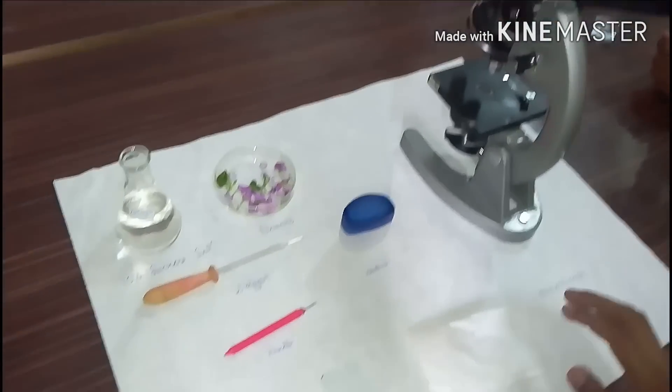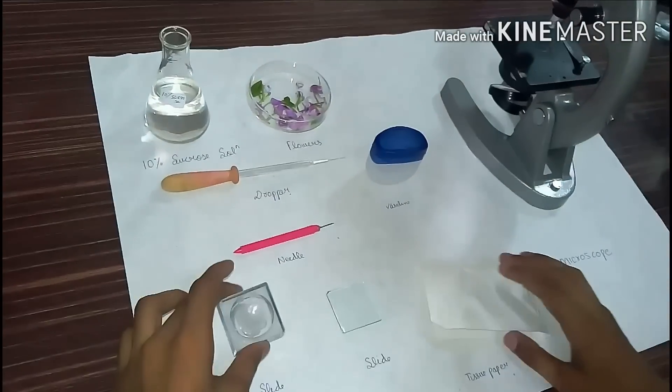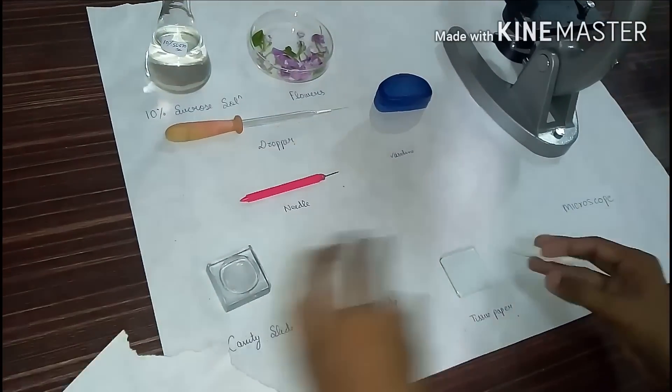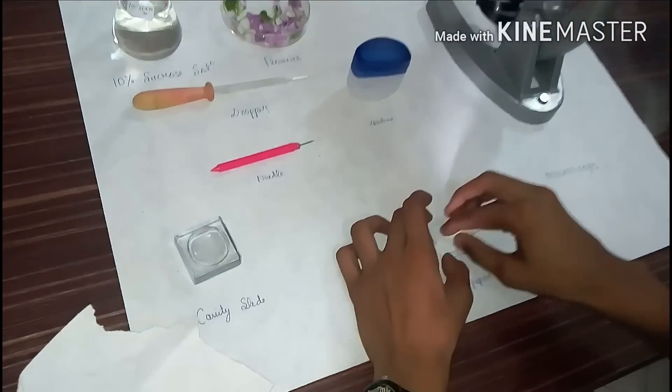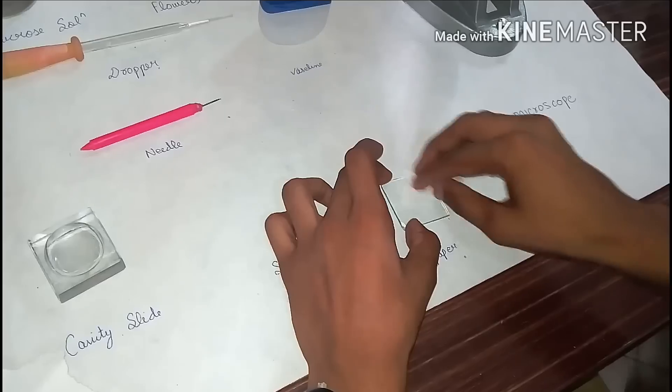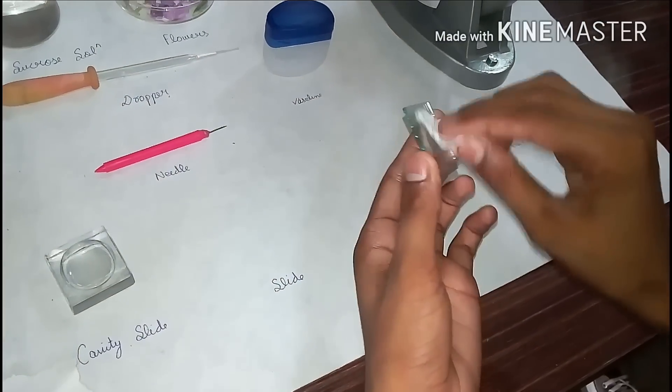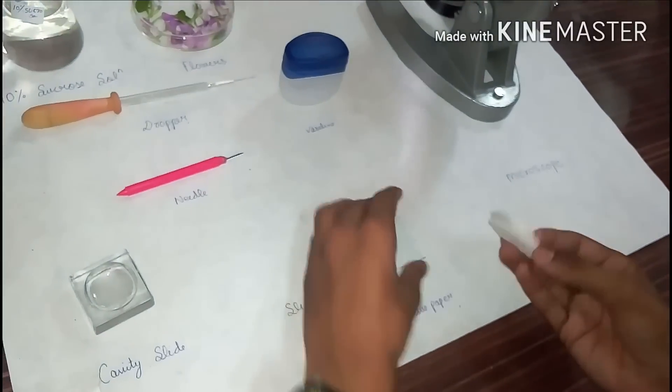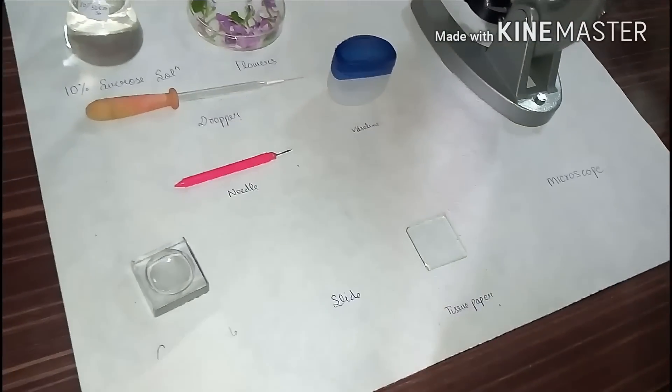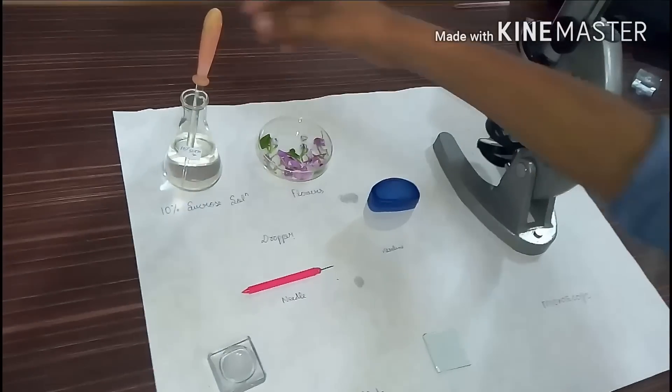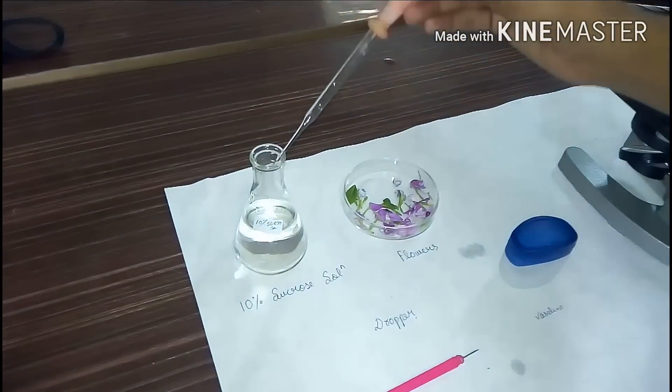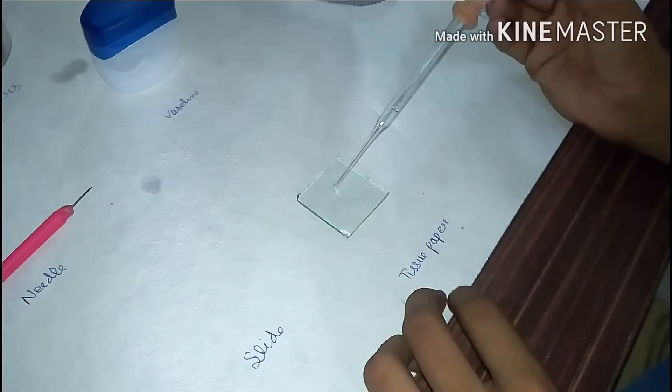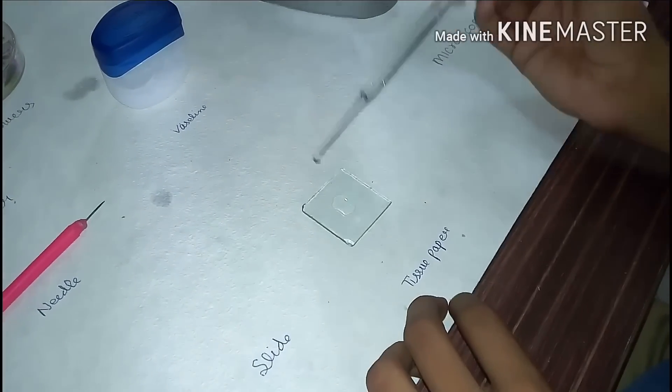And here we start. First we take a slide, we clean it with tissue paper. Clean it properly so that there will be no dirt or anything on the slide so we could have a clean and beautiful slide. We are going to take 10% sucrose solution on our slide, only just one or two drops.